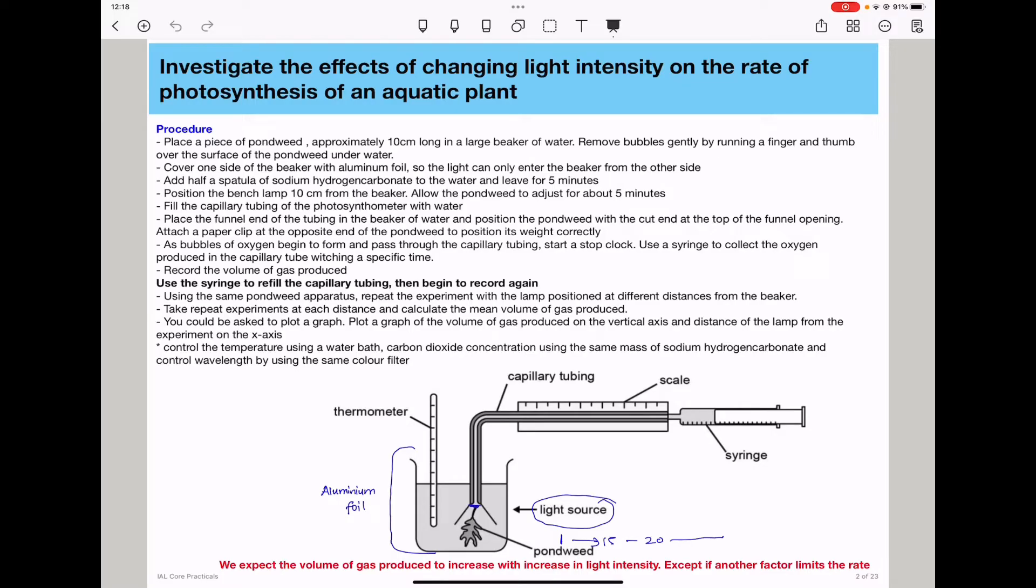You need to position the bench lamp 10 centimeters from the beaker and allow the pondweed to adjust for about five minutes. You need to allow it to adjust to the temperature and the conditions within the water as well as the light source before you can measure the experimental results. Fill the capillary tubing of the photosynthometer with water. Place the funnel end of the tubing in the beaker of water and position the pondweed with the cut end at the top of the funnel opening.